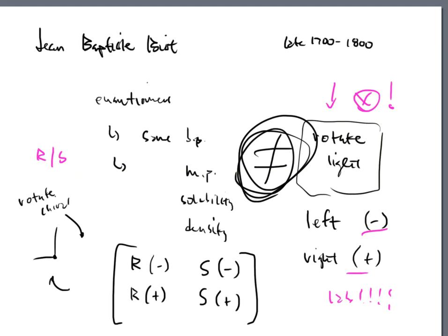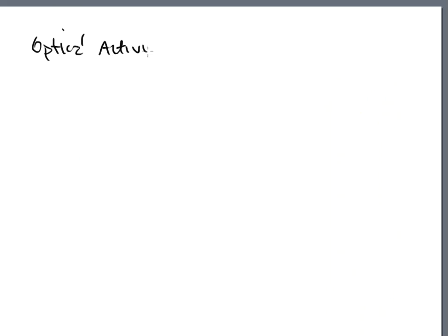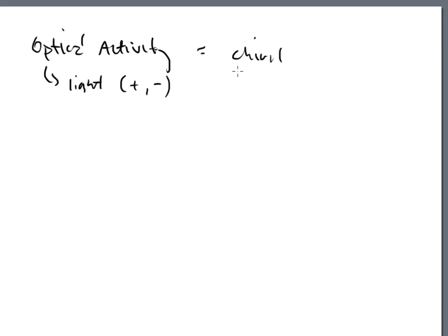All of this leads into Jean-Baptiste Biot's field of study — optical activity. 'Optical' relates to light, and 'activity' refers to how it rotates: does it go positive or negative, left or right? So this creates optical activity. All enantiomers have optical activity. If a molecule has a chiral center, it has optical activity — we just need to measure it.